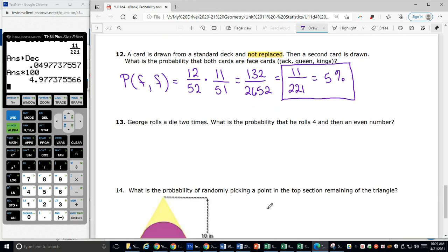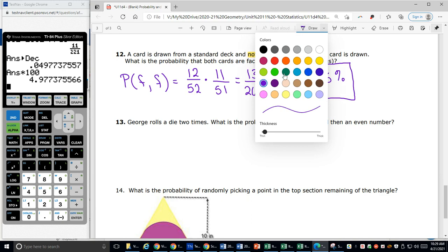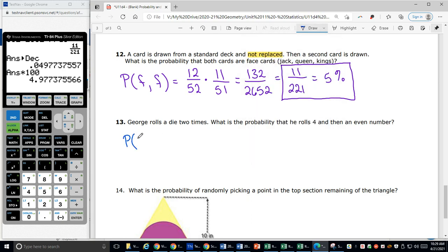All right. Number 13, George rolls a die two times. What's the probability he rolls a four and then an even number? So probability that I roll a four and then an even. On my die, there's one four on that die. All the other sides have different numbers. There are six total numbers on the die. So my probability of rolling a four the first time is one sixth.